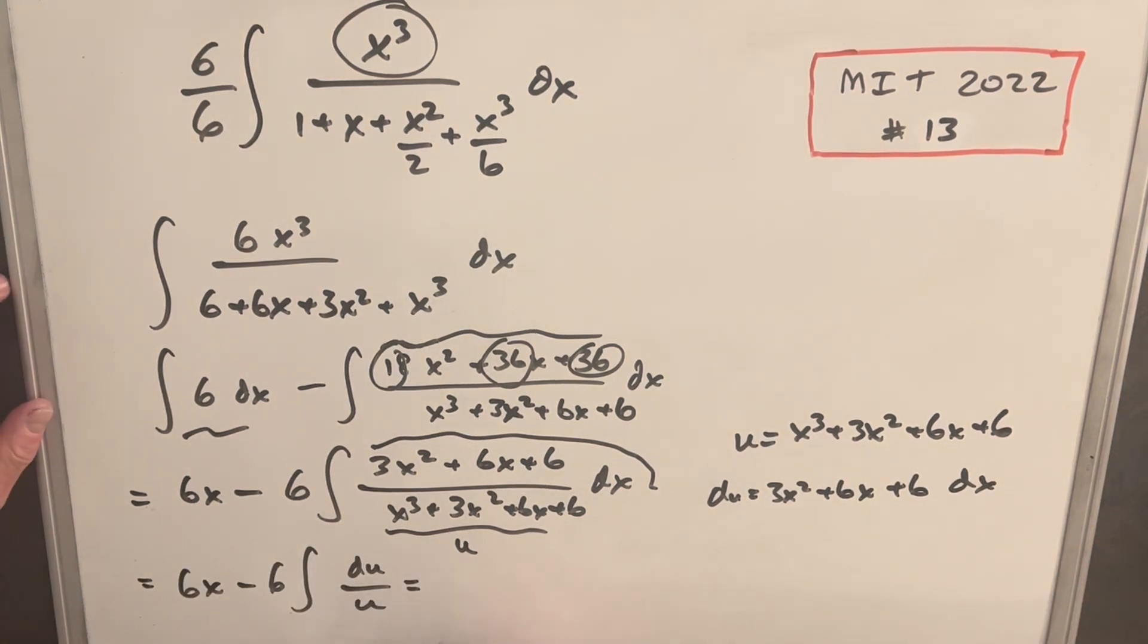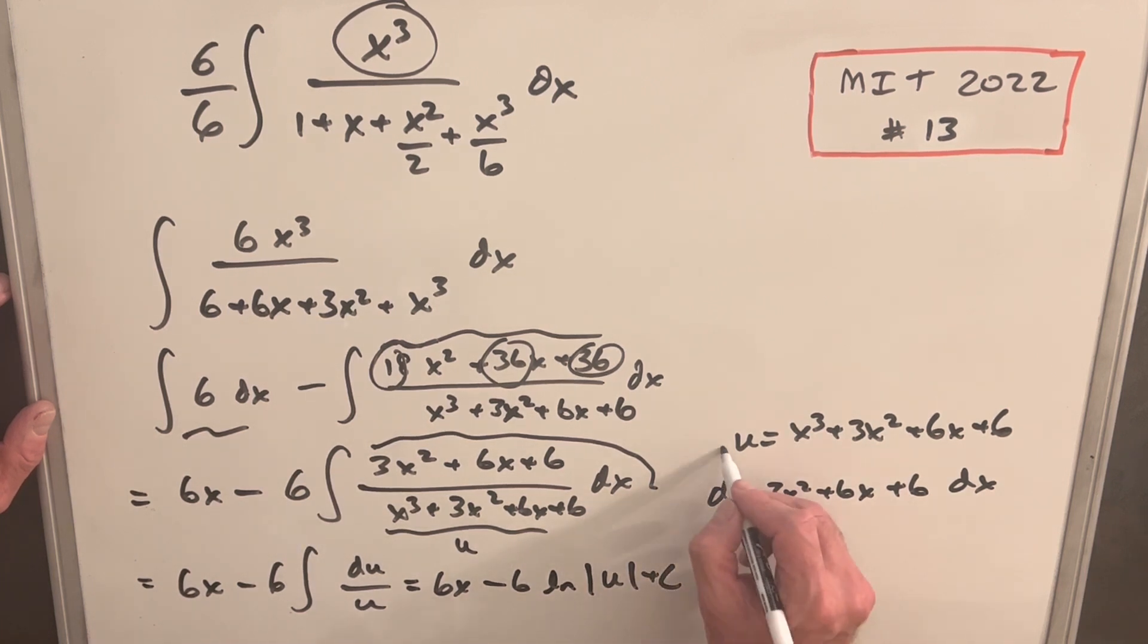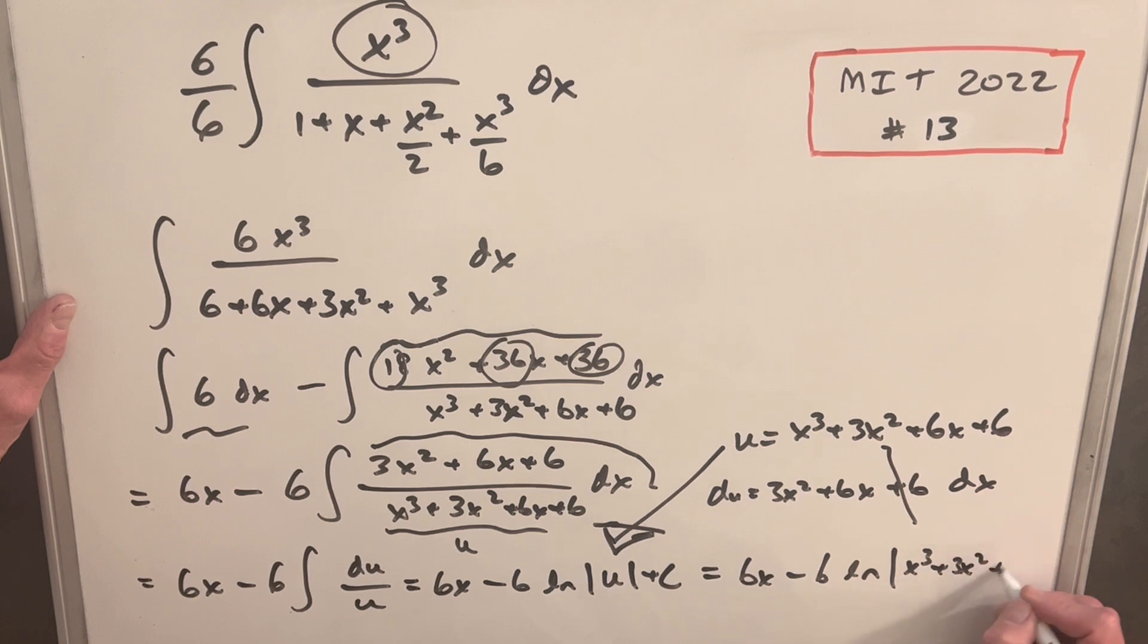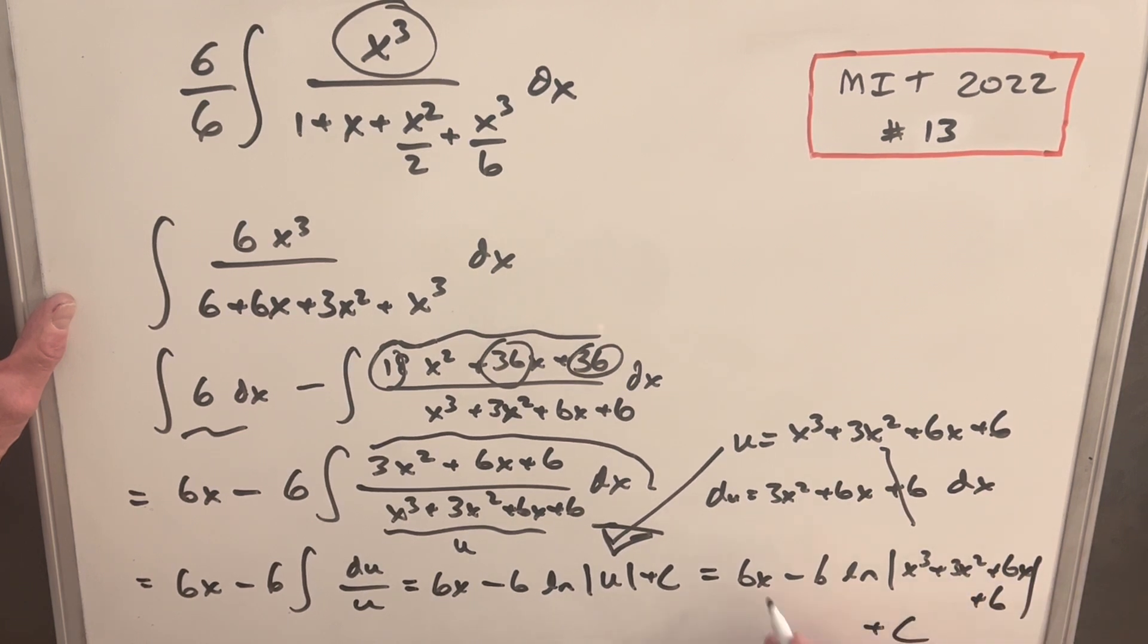So then having made our substitution, we can rewrite this 6x minus 6. This is just going to be ln absolute value of u plus c. And then all we have left to do is we just need to do our back substitution here. So for our final answer, we're going to have 6x minus 6 ln absolute value of this stuff, x cubed plus 3x squared plus 6x plus 6 plus c. And we're done.